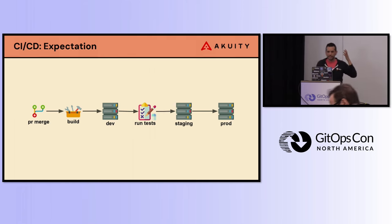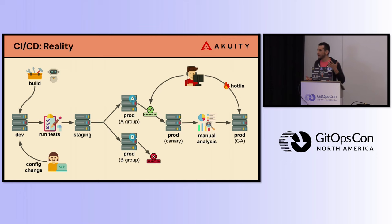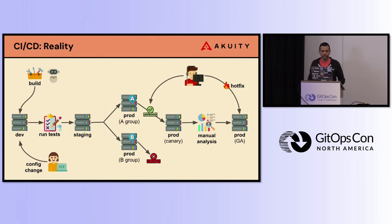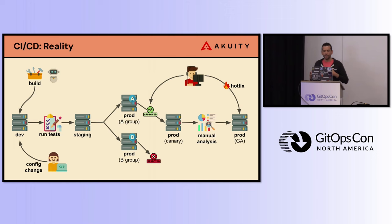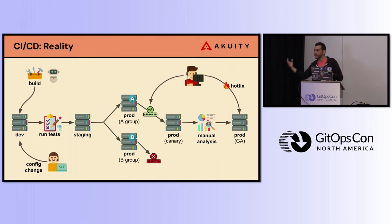This is kind of the expectation, but the reality is much different. The reality looks kind of like this — there's some event, either a config change, an application change, some sort of code merge. You build and test it, deploy it to dev, run some tests, it goes to staging, then you do a canary, blue-green type of thing. This is rejected or approved to prod, there's a manual analysis, there may be a hot fix — and all this process triggers other processes that have other processes.